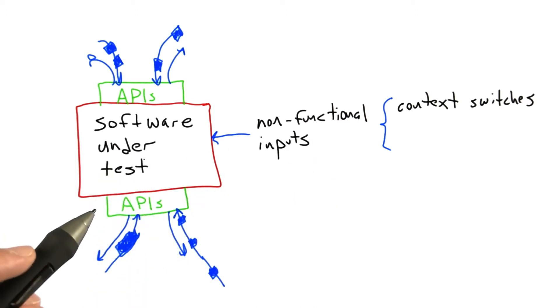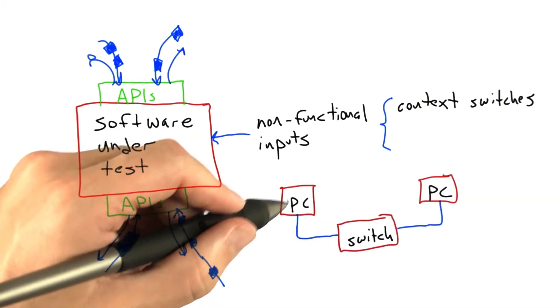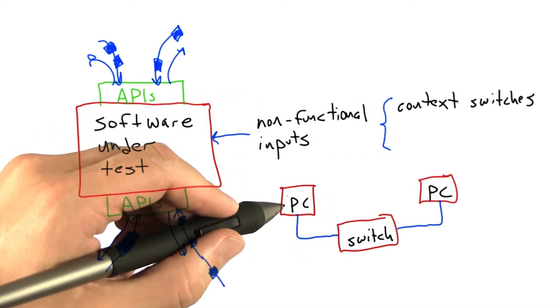Let me give another example of non-functional inputs. Some years ago, in the late 1990s, I spent a summer working at a company that made very fast networking hardware. This hardware, for example, would let two PCs talk at multi-gigabit speeds using a switch.